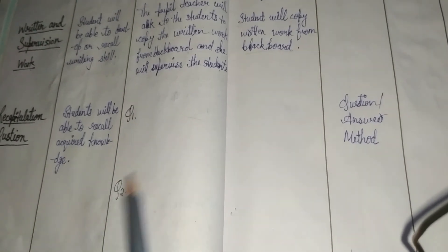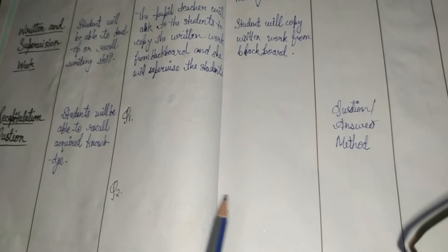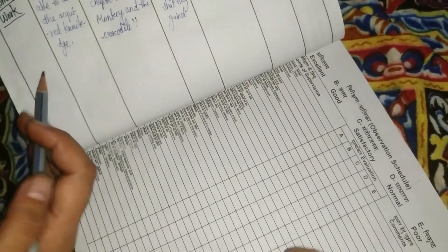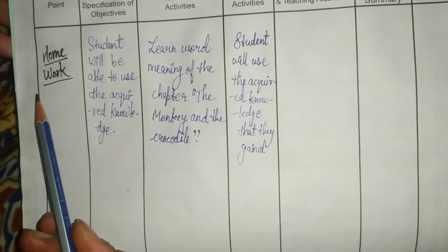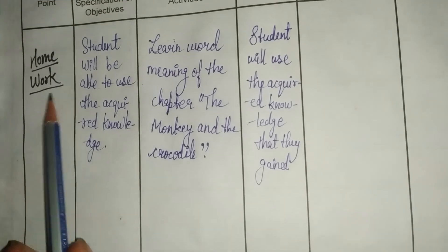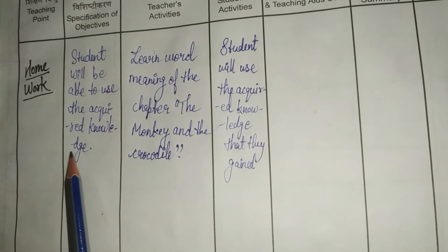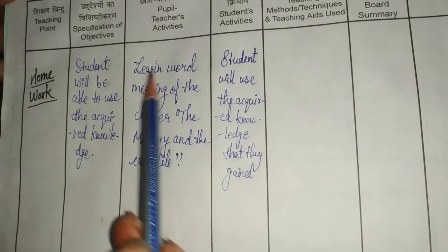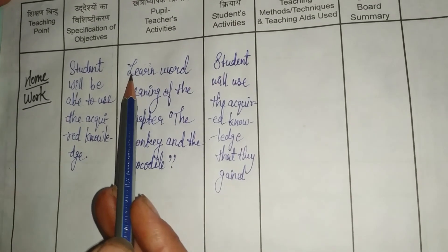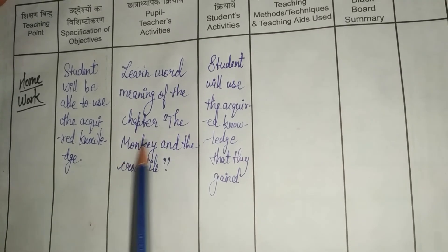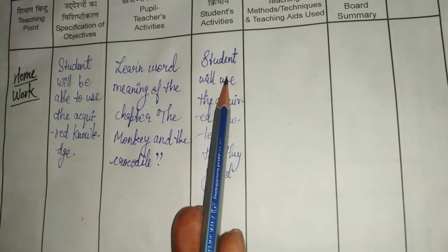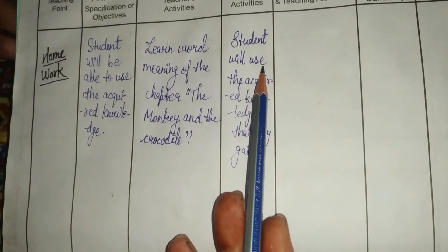Then come recapitulation questions — the teacher asks questions and the students answer them. Finally, there is homework. During recapitulation, students use their acquired knowledge. The homework also helps students use their acquired knowledge. The teacher will assign homework: students will learn the word meanings of the chapter 'The Monkey and the Crocodile.' The next day, the teacher will ask them about it.